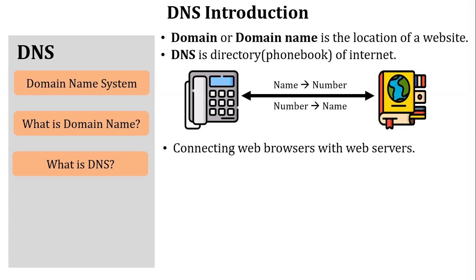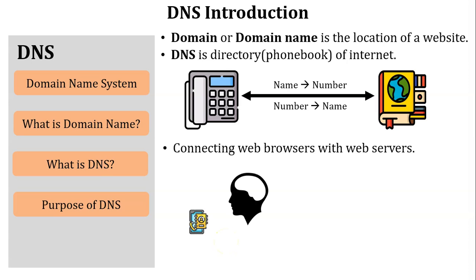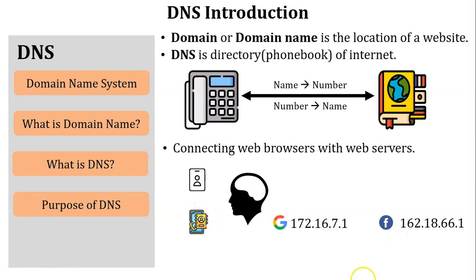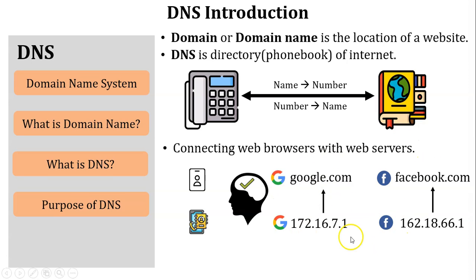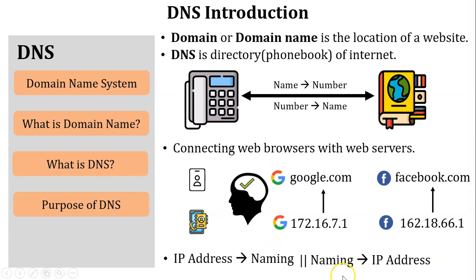Next, the purpose of DNS. If someone asks you to remember 50 people's mobile numbers instead of their names, that's difficult — the human brain can store limited numbers, but we can remember many more names. Similarly, if someone asks you to open Google or Facebook using an IP address, our brain can remember only a limited number of IPs. So we access websites using their names instead of IP addresses. The purpose of DNS is mapping IP addresses to names and names to IP addresses — similar to a telephone directory.